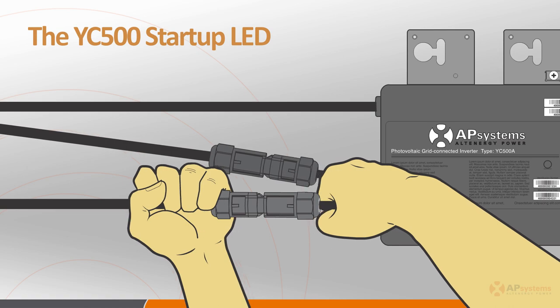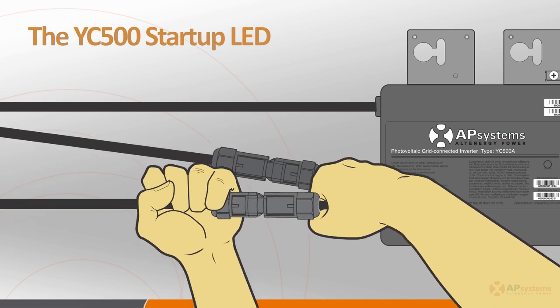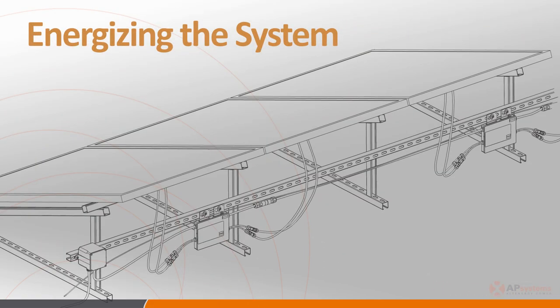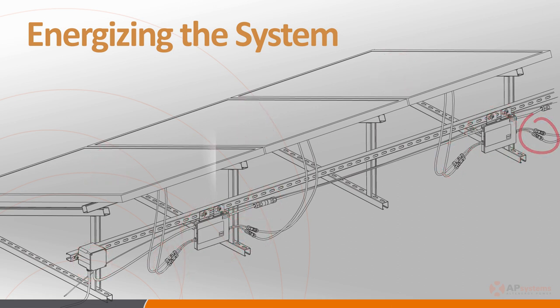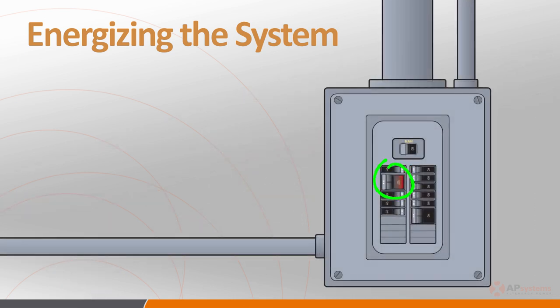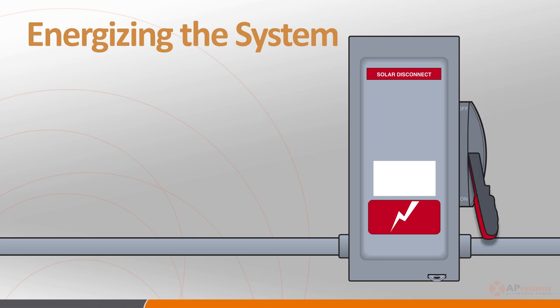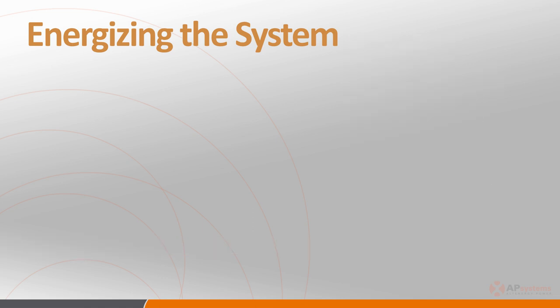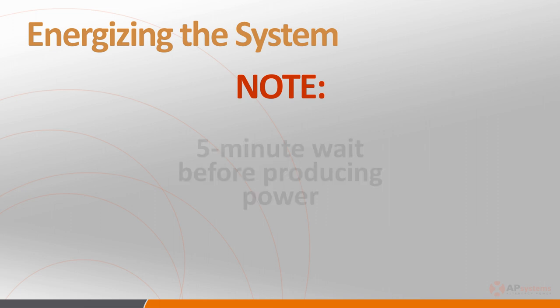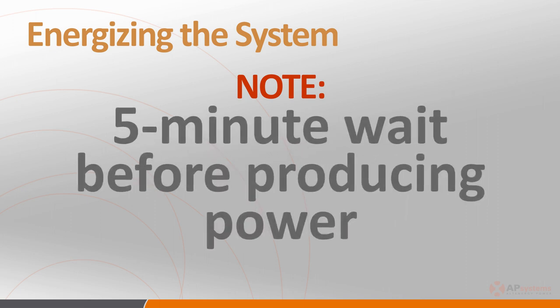This startup indication only happens when the DC power is applied to the first side of the connected inverter. Check the DC connectors if you don't see the green startup LED flash. With the PV modules and inverters in place and all connections thoroughly checked to make sure they're secure, you're ready to energize the system. First, turn on the AC circuit breaker associated with each microinverter AC branch. Next, turn on the main utility grid disconnect. Note: as a safety precaution against potential islanding, the system will not start producing power for a full five minutes after it detects the presence of the grid.